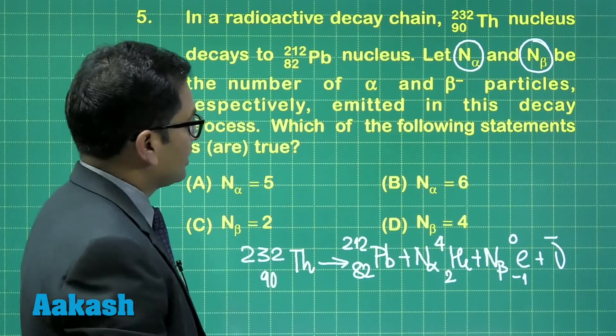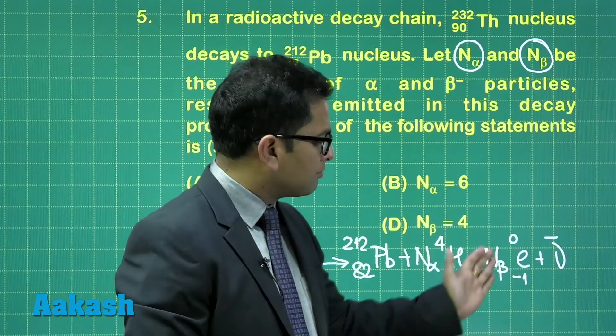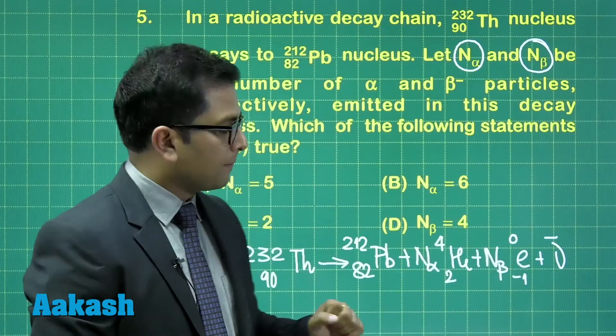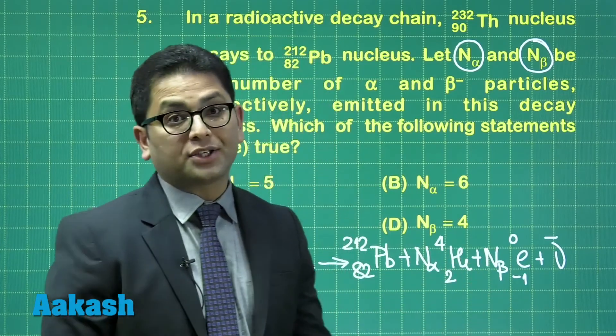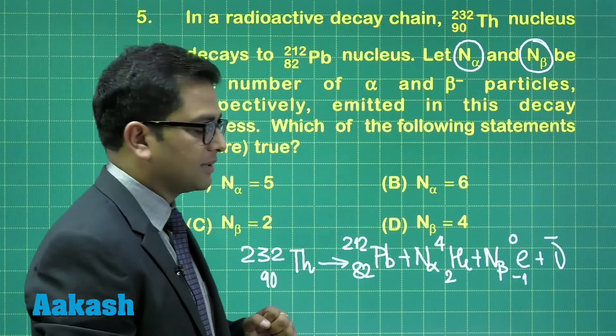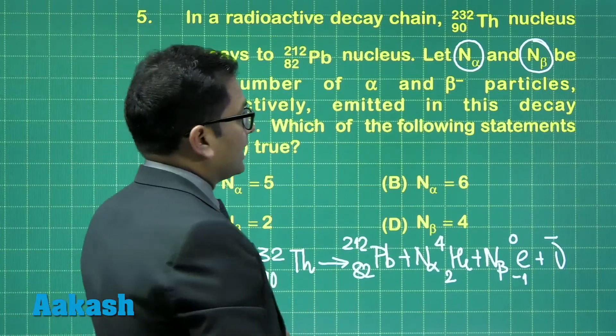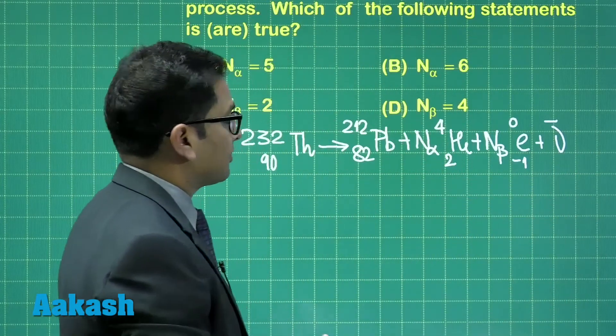Plus N_beta - the beta minus, so that will be minus one, zero - plus the number of antineutrinos which would be coming. I'm not much focused on the antineutrino. If you wish, you can write N_beta times the antineutrino. I am not interested in this, the reason being that this is not going to participate in the atomic number and the mass number.